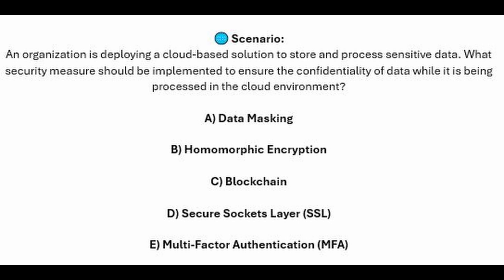Is it A, data masking? Is it B, homomorphic encryption? Is it C, blockchain? Is it D, secure sockets layer or SSL? Or is it E, multi-factor authentication or MFA?